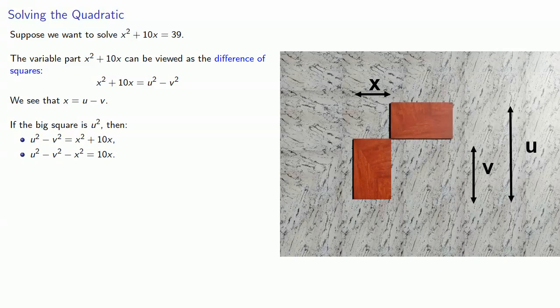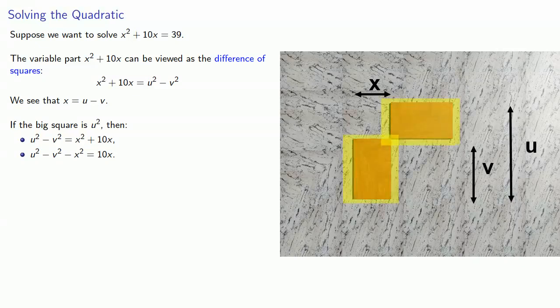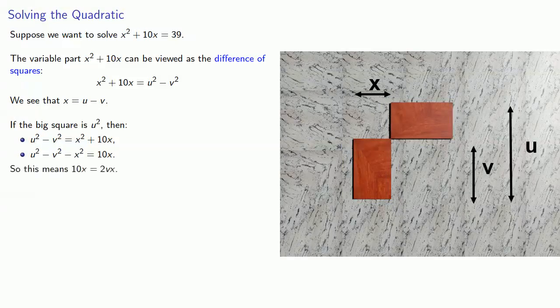What's left are these two wings, which are 2vx. And so this means that 10x has to be 2vx.